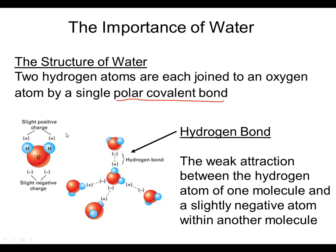Because of that polarity, there's a very unique type of bond that occurs with polar molecules, particularly water molecules, and that's called a hydrogen bond. Hydrogen bonds can be described as the weak attraction between the hydrogen atom of one molecule and a slightly negative atom within another molecule.